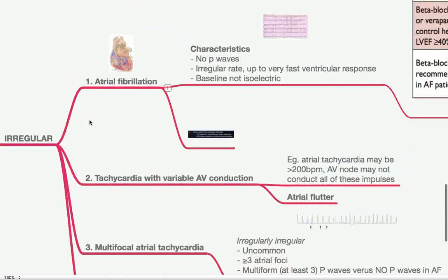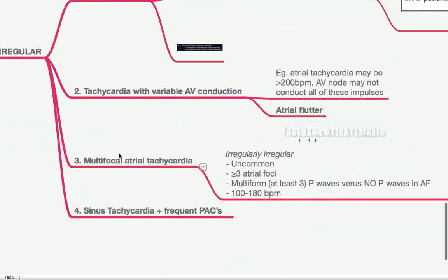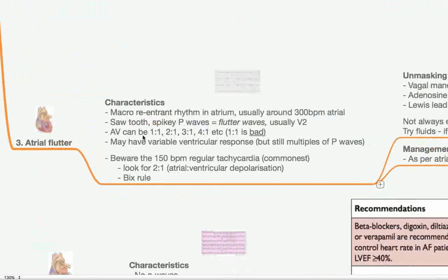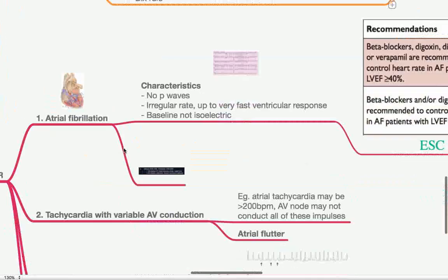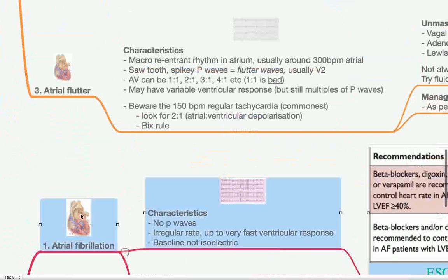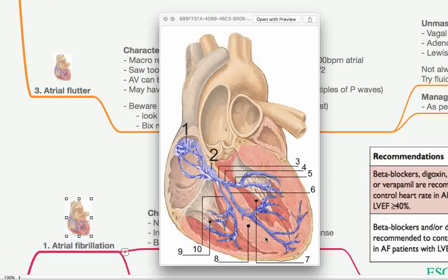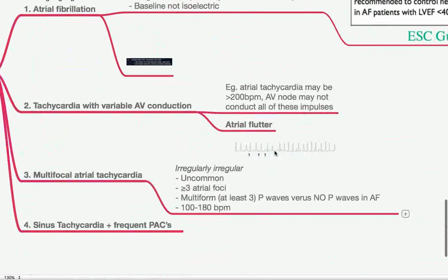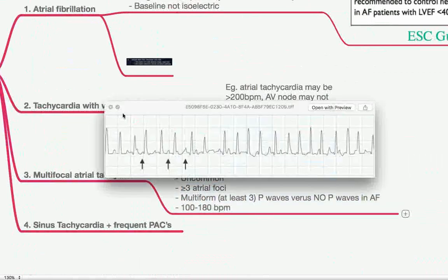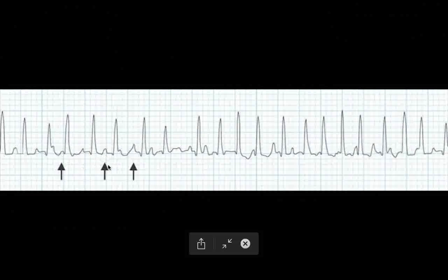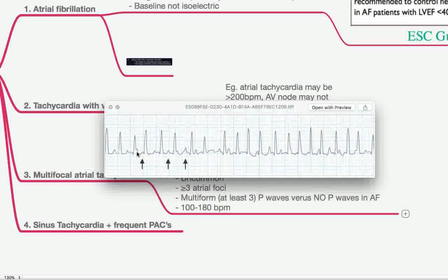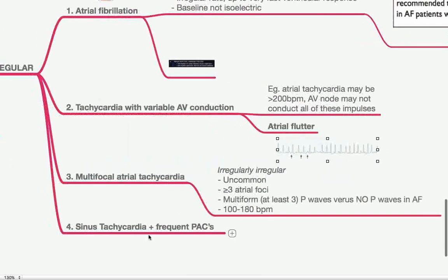So that's irregularly irregular, or just to be honest, irregular tachycardias, which are narrow complex. Your vast majority are going to be atrial fibrillation. Next, we can have tachycardia with variable AV conduction. Basically, as I've mentioned up here, the AV can conduct the atrial impulses at a variable rate, such as an atrial flutter. Multifocal atrial tachycardia, that's when you've got three or more areas in the atria, one, two, three, for example, firing off their own little impulses, and that will be irregularly irregular. And because there are three or more atrial foci, you're going to have at least three different types of P waves. As you can see here, this P wave is different to this P wave, is different to this P wave. That is versus AF where there are no P waves. And then finally, sinus tachycardia with frequent random premature atrial complexes firing off on top of that could also give you an irregular narrow complex tachycardia.